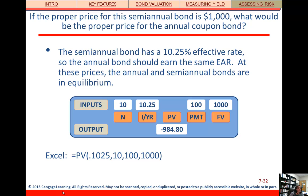Looking at the semi-annual bond with a 10.25% effective annual rate: if the proper price for that bond is $1,000, what would be the proper price for the annual coupon bond? The semi-annual bond has a 10.25% EAR, so we use that as the yield and solve for the present value to get the price. The annual bond should earn the same EAR as the semi-annual bond — 10.25%. So we had to bring EAR in one more time.